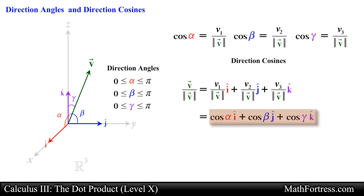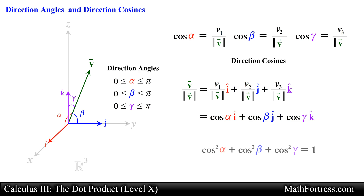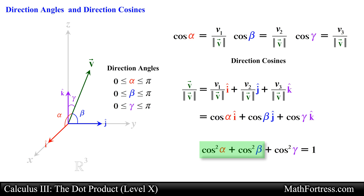From this result it follows that cos squared alpha plus cos squared beta plus cos squared gamma is equal to 1, since the normalized form of vector v represents a unit vector with magnitude equal to 1. With this expression, if only two of the direction angles are known, the third direction angle can be found by using this expression.